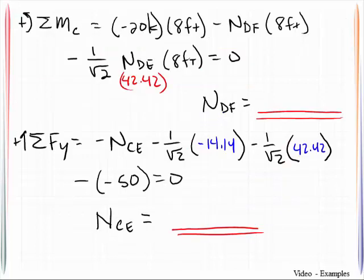Take those known quantities and we can finish out the equations of equilibrium. Summing moments about point C would then give me negative 50 kips.